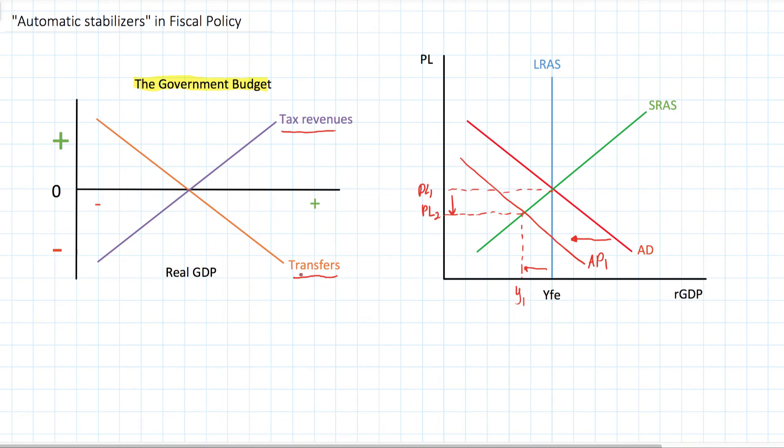So how does government spending on transfers and how do tax revenues change automatically when there is a decrease or an increase in real GDP? We're going to assume that the full employment level of output occurred at a point where the government had what we call a balanced budget. Notice that tax revenue equals the amount spent on transfers. Now this is a bit simplified because in the real world, governments spend money on a lot more than just transfer payments, but we're going to keep it somewhat simple here and assume that the amount of taxes collected is equal to the amount of government spending on these transfer payments. Therefore, the budget balance is zero.